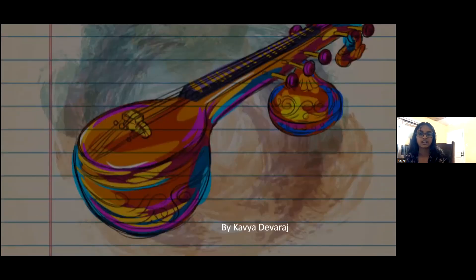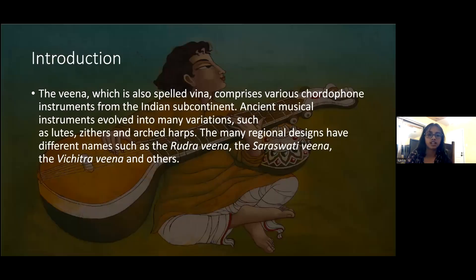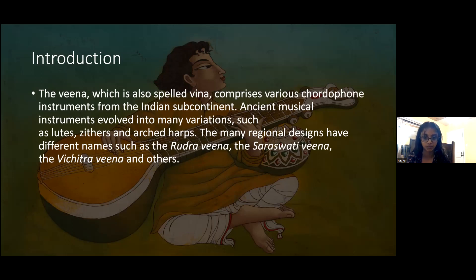Veena, by Kavya Davraj. Introduction: the Veena, which is also spelled Vena, comprises various chordophone instruments from the Indian subcontinent. These ancient musical instruments evolved into many variations such as lutes, zithers, and arched harps. The many regional designs have different names such as the Rudra Veena, the Saraswati Veena, and the Vichitra Veena, among others.